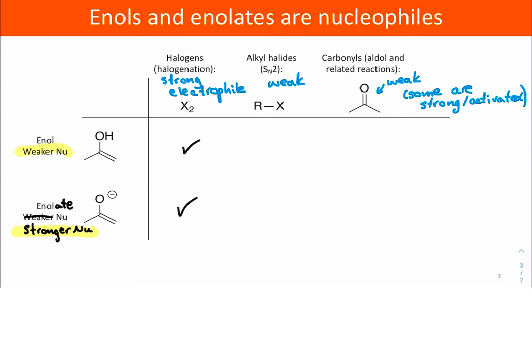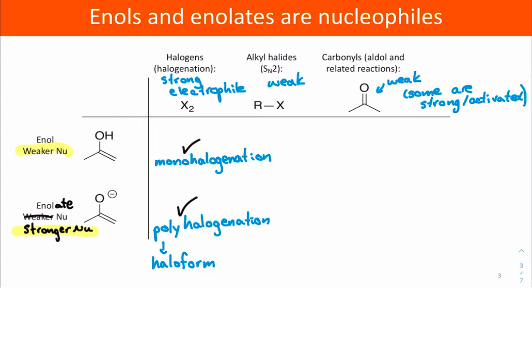So we get polyhalogenation under basic conditions. So to go back, if we have an enol, we do these reactions with halogen under acidic conditions, we get monohalogenation. Under basic conditions, we get polyhalogenation. And that turns into the haliform reaction where we have that CX3 leaving group, so CCl3 in our case, if we can get three halogens onto that carbon atom. So that reaction is often problematic. Sometimes there's reasons to do it, but often we try to avoid those basic conditions and we go with monohalogenation under acidic conditions instead.